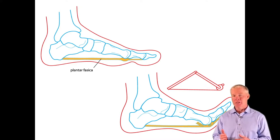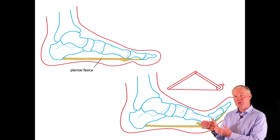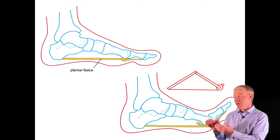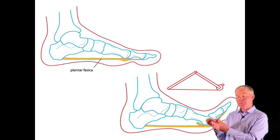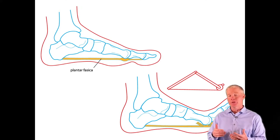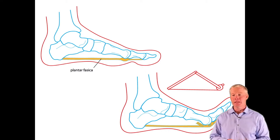The plantar fascia is an important component of the biomechanical process of pronation and the windlass mechanism. It inserts on the calcaneus, travels down onto the toes, and when the toes dorsiflex during toe-off, the plantar fascia wraps around the metatarsal heads, creating tension which pushes the arch of the foot upward — that's what locks the foot out. The windlass mechanism and the plantar fascia are intimately related.